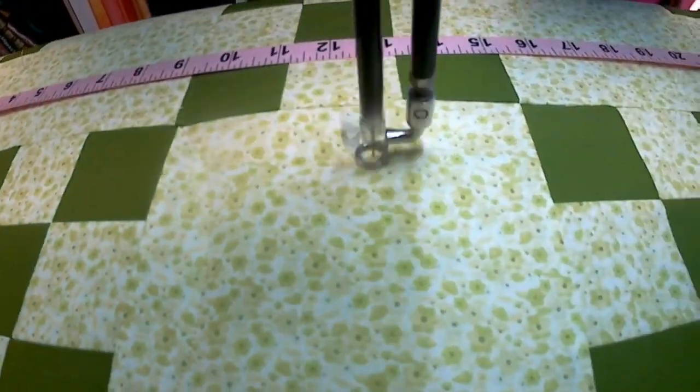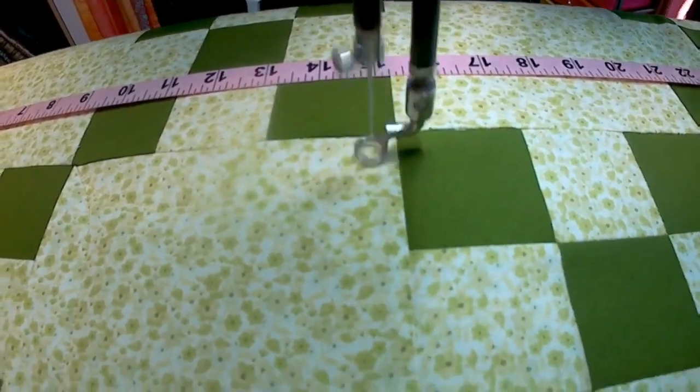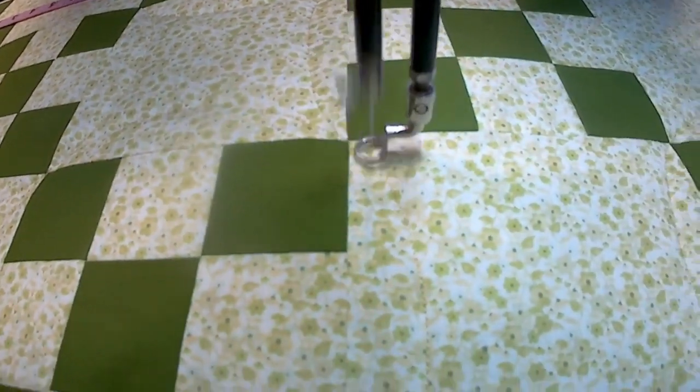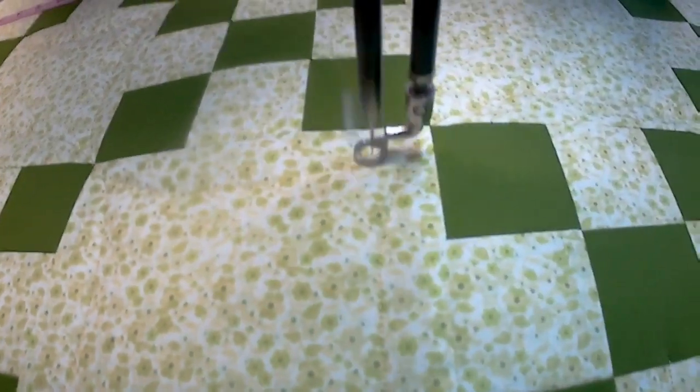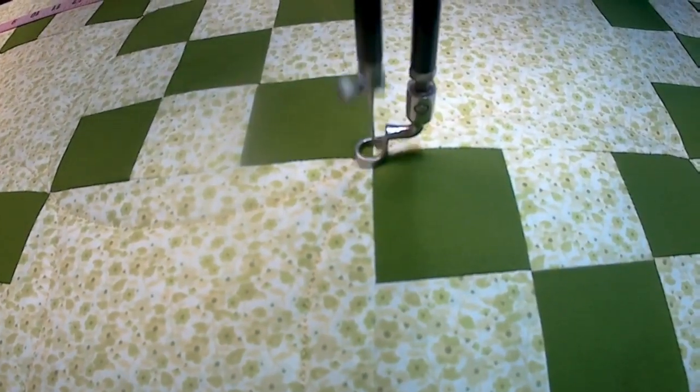Once I get back to the other side, I will need to break thread, roll the quilt, and then start doing the secondary part of the design in the first row, the top row.